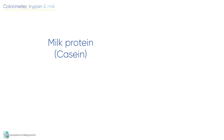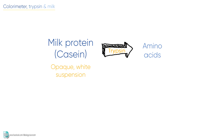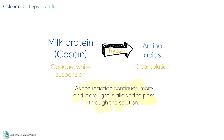Milk contains the protein casein. It is broken down by protease enzymes such as trypsin. As the reaction occurs, the opaque white color of the milk is replaced by a clear solution. So as time goes by, light passes more and more easily through the solution. This is why the reaction can be monitored by using a colorimeter.